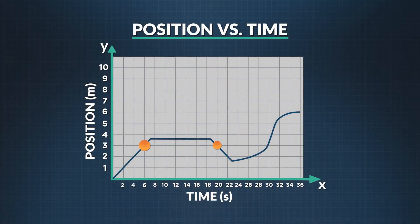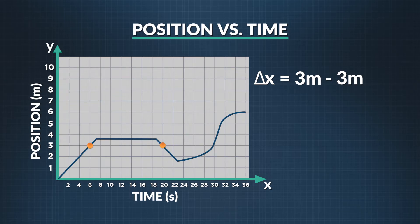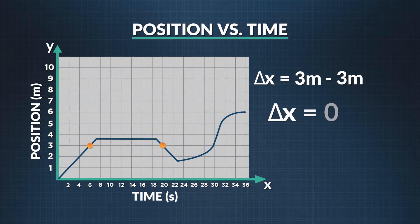Now let's find Summer's displacement between time 6 seconds and 20 seconds. You do that by finding her change in position between two points, or delta x — another way to say it is x final minus x initial. At time 6 seconds, Summer's position was 3 meters. And at time 20 seconds, Summer's position was also 3 meters. Her displacement would be 3 meters minus 3 meters, or 0 meters between time 6 and 20 seconds.